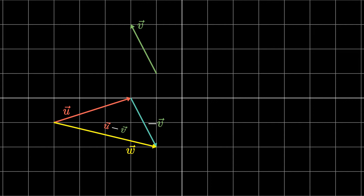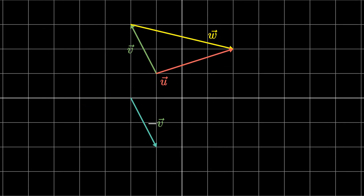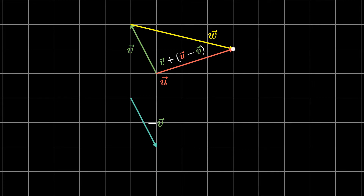Another way to show this using triangle law is to migrate vector w so its starting point is at the end tip of vector v, and then migrate vector u so its starting point is the same as vector v. When we arrange the vectors in this way, it's saying that v plus w gives us u, which is true because w equals u minus v. So if we did v plus (u minus v), the v's cancel out and leave us with just vector u. Vector u has the same starting point as vector v and the same terminal point as w, which shows that w is the difference between vectors u and v. So those are two ways to show that w is the difference between vectors u and v using triangle law.